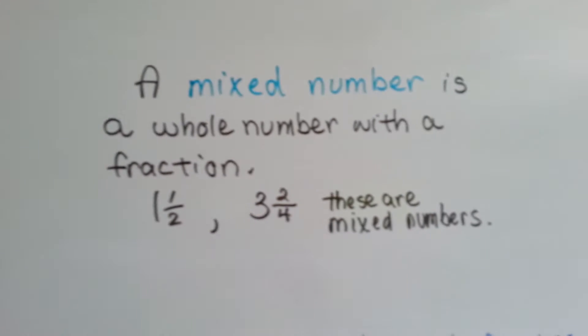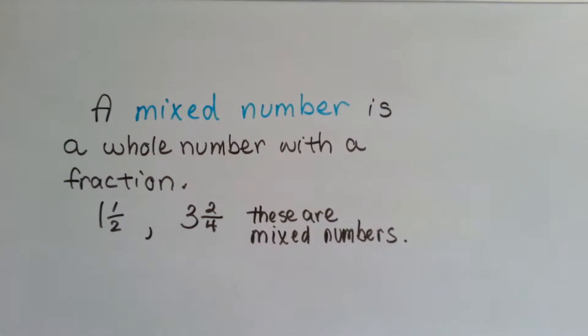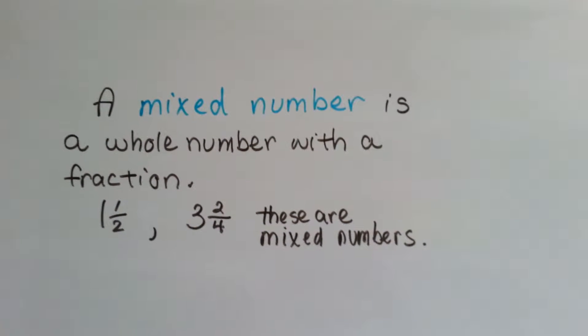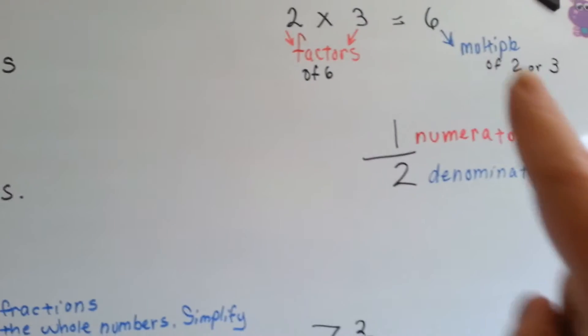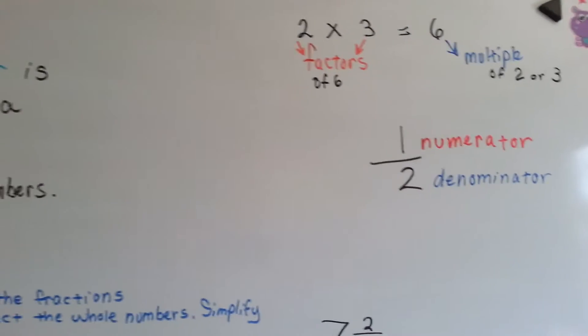Remember a mixed number is a whole number with a fraction. One and a half is a mixed number. Three and two fourths is a mixed number. Also remember that the top of the fraction is the numerator and the bottom is the denominator.